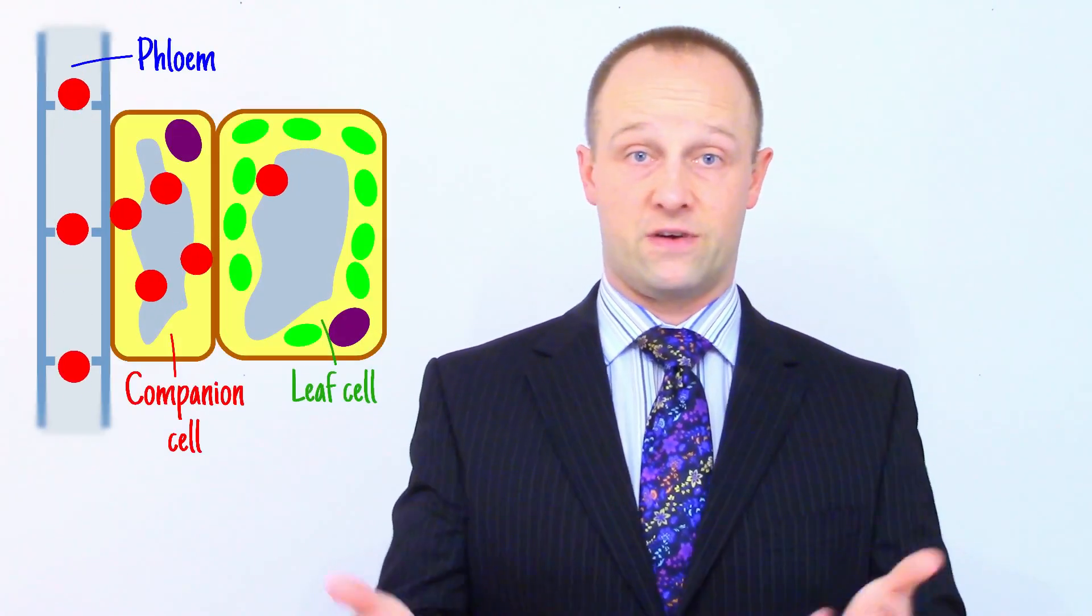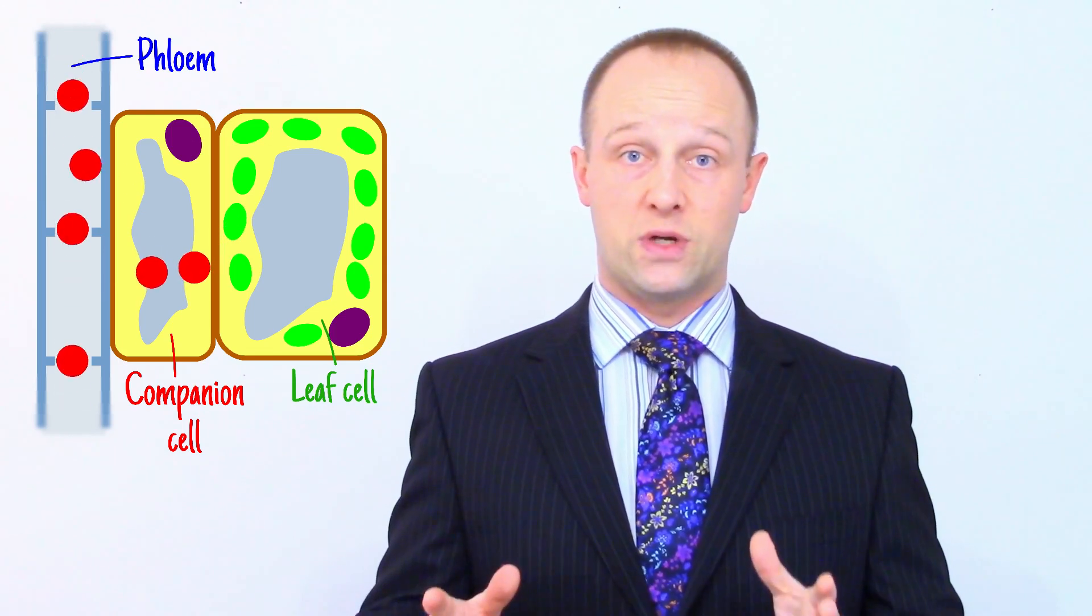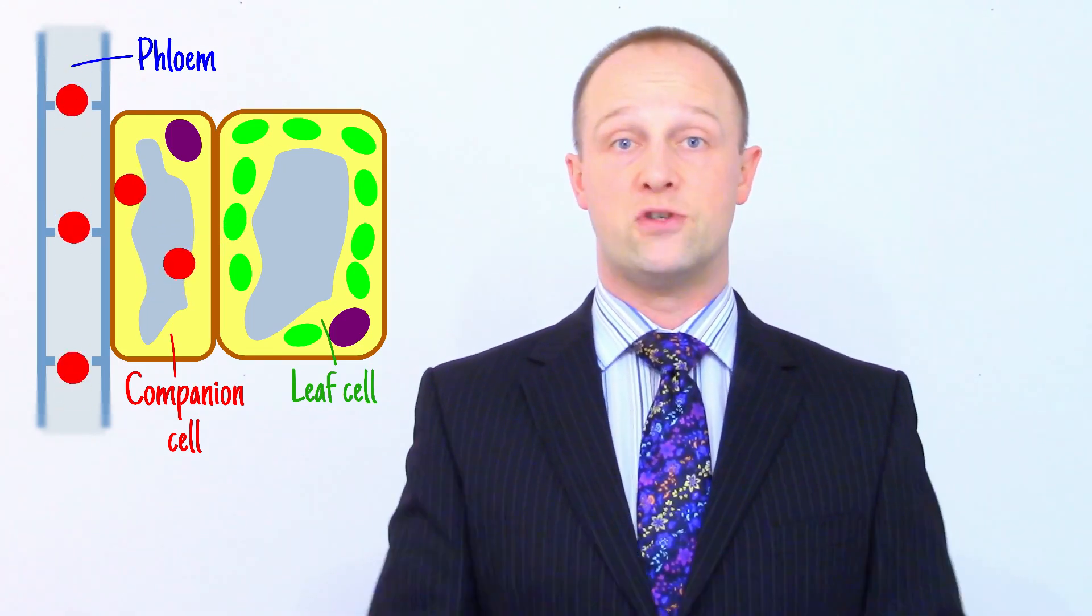When photosynthesis, for example in the leaves, has produced sugar, active transport is needed there to load those sugars into the phloem for distribution around the plant.